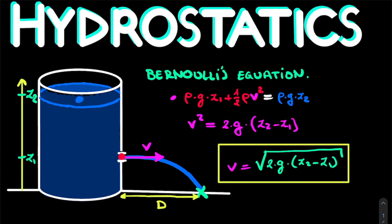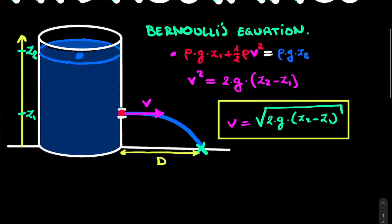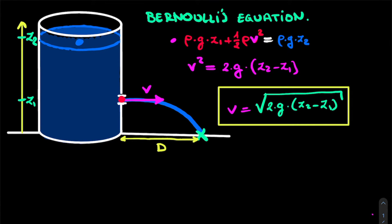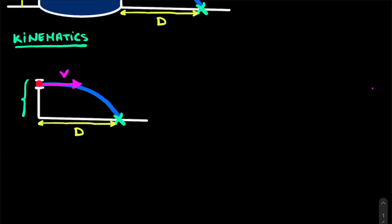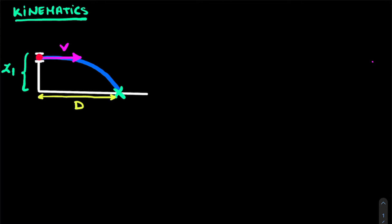Now that we've linked the exit velocity to the difference in heights, we move to the second part: the kinematics. Here we focus on the section where water leaves the hole with velocity v and we need to determine where it hits the ground. The water starts at height z1 above the ground and travels under gravity, so this is a two-dimensional kinematics problem. We need to find the distance D.